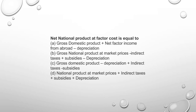Factor cost versus market price: if the market price is 80 rupees, then factor cost equals market price minus indirect taxes plus subsidies. If the government provides a 20-rupee subsidy, market price includes taxes paid by consumers, so we subtract indirect taxes to arrive at factor cost.